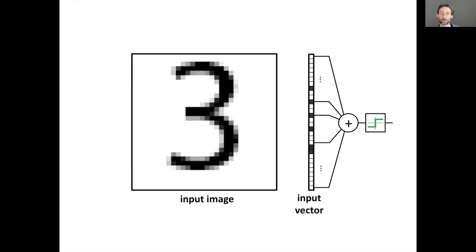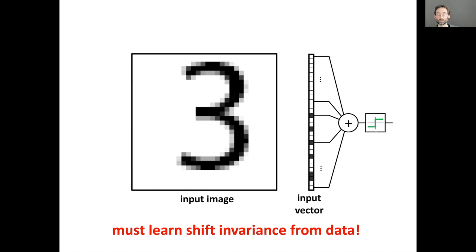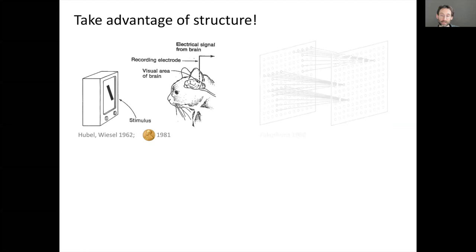If you apply simple neural networks to images by just vectorizing them into a long pixel vector, the problem is that shifting the image makes this representation completely oblivious to the geometric structure of the input. It doesn't know it's a two-dimensional grid — it's just a vector — so you'd need many examples showing the image at different positions to train the network.